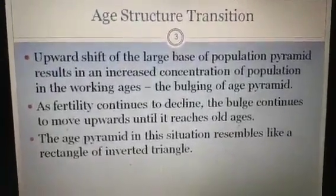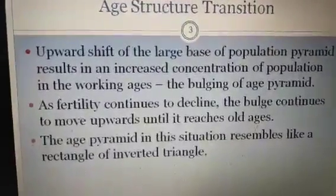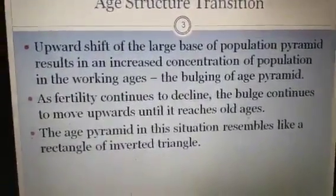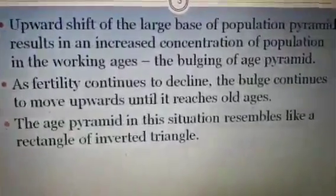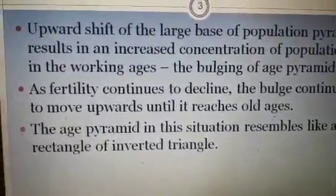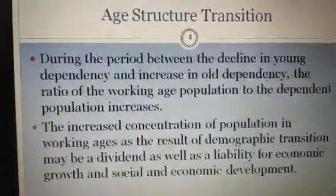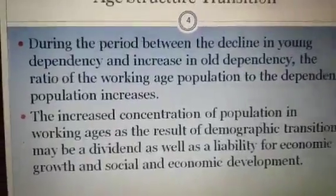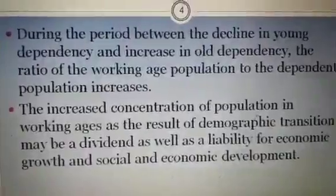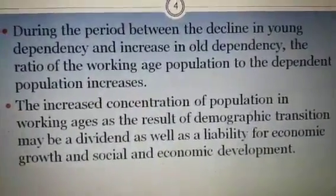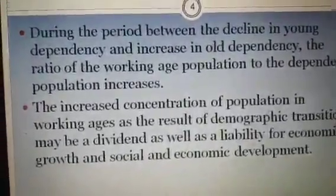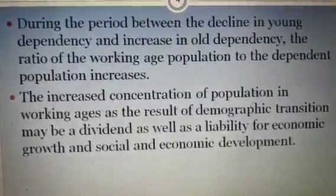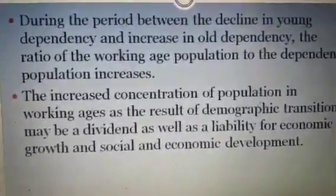As fertility continues to decline — remember the demographic transition 2nd and 3rd stages — the bulge continues to move upwards until it reaches old ages. So the age pyramids in this situation resemble a rectangular or inverted triangular shape. During the period between the decline in young dependency and the increase in old dependency, the ratio of the working age population to the dependent population increases. This is how we can talk about the social and economic impacts of age structure transition, because the increased concentration of population in working ages may be a dividend as well as a liability.